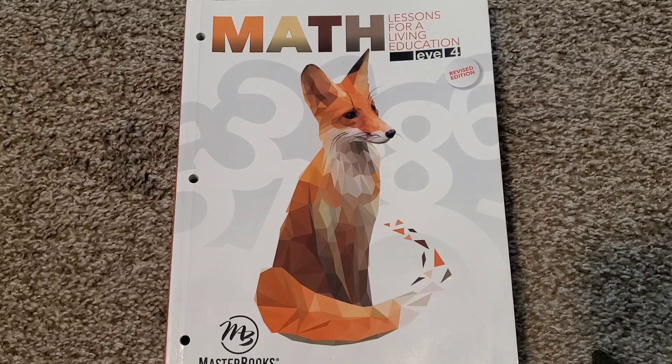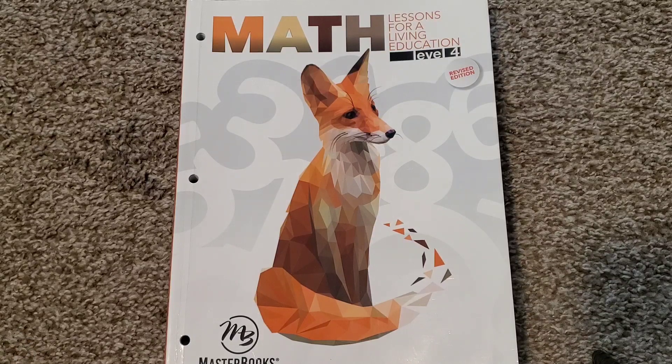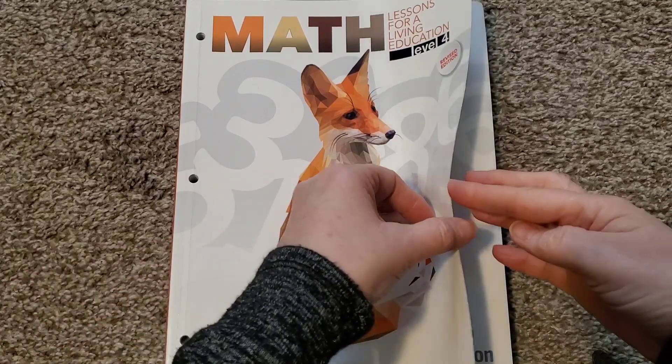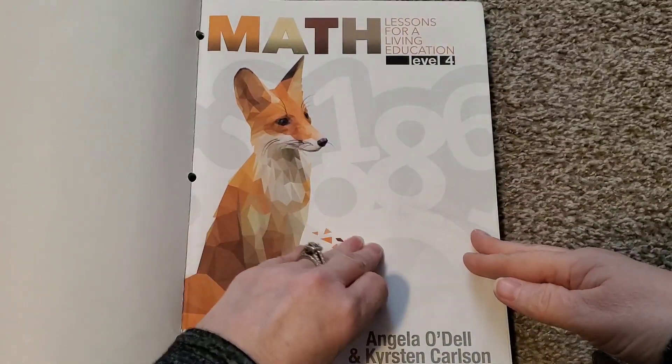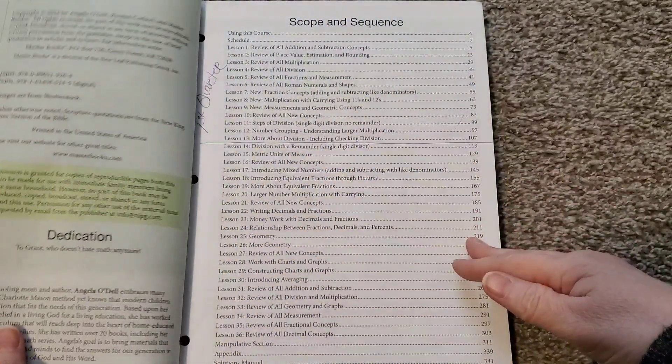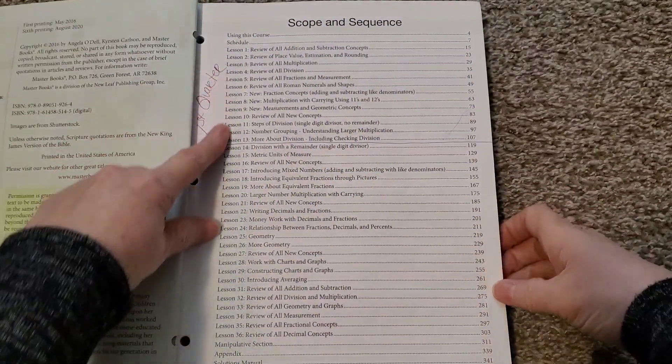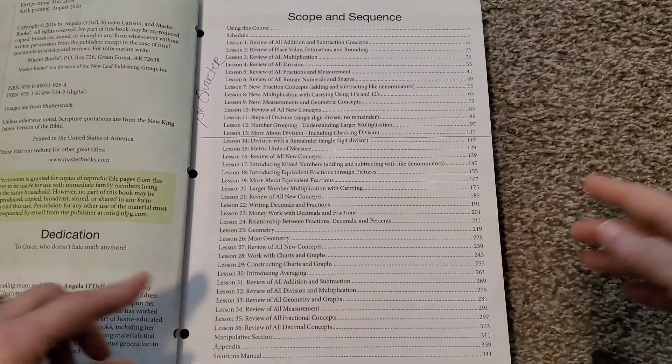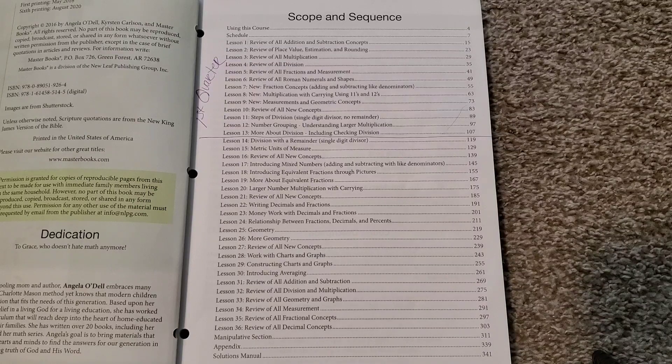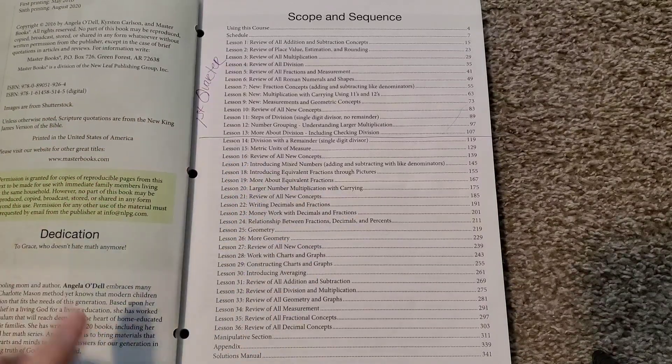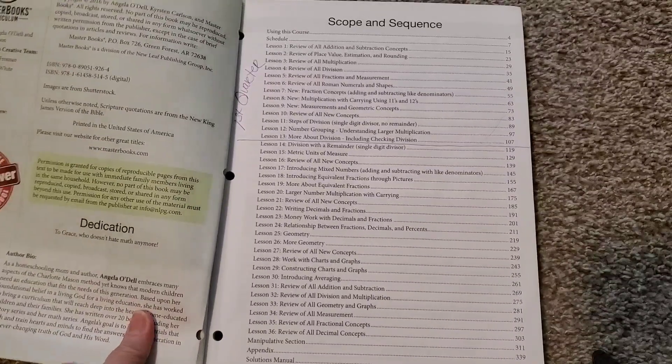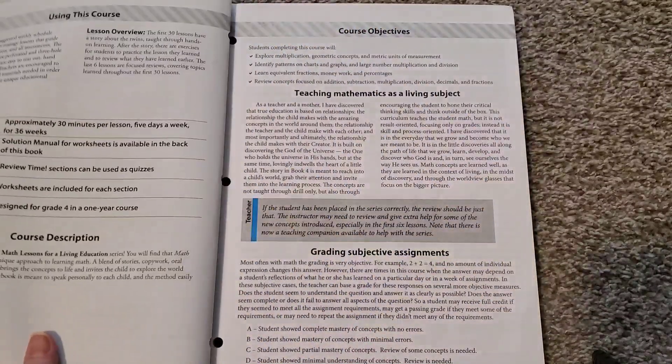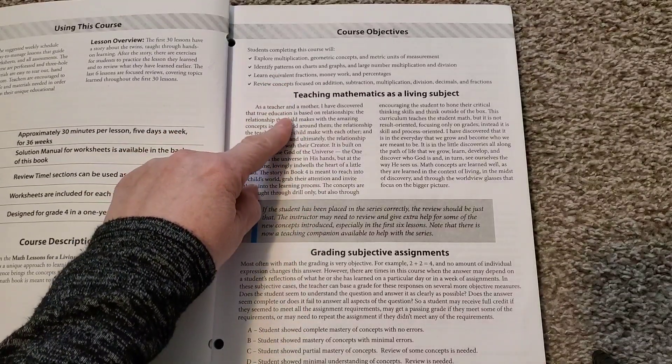So I just thought it would be nice to go ahead and do a flip through of level four to show you what all is in it and what it's all about. So I'm going to go ahead and open it up here. So it gives you a full scope and sequence, which is perfect for those of you that are New York State homeschoolers. All you have to do is make a copy of this page. It is perfect.